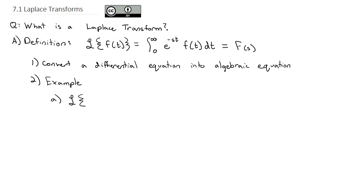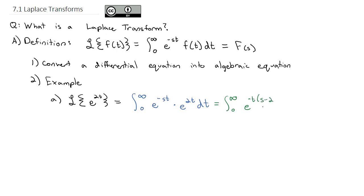Let's find the Laplace transform of e to the 2t. Using the definition, we have the integral from 0 to infinity of e to the negative st times e to the 2t dt. Since we have the same base we can add the exponents, factoring out negative t to get e to the negative t times s minus 2 dt. We integrate by dividing by the exponent, giving us negative 1 over s minus 2 times e to the negative t(s minus 2), evaluated from 0 to infinity.